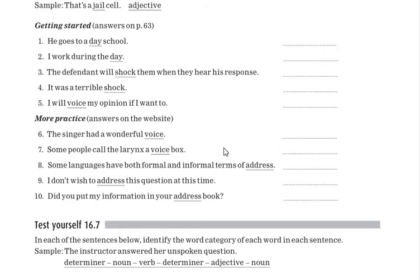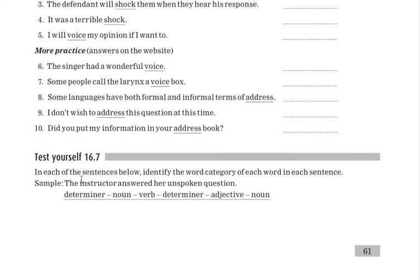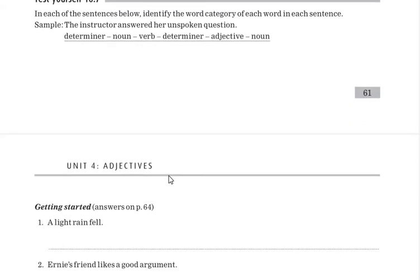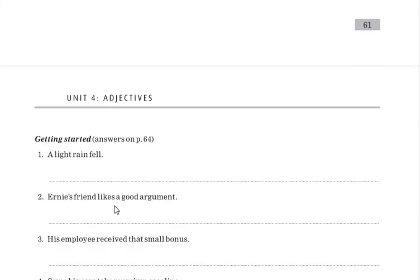Exercise 16.7 asks you to identify the word category of each word in a sentence. For example: 'the' is a determiner, 'instructor' is a noun, 'answered' is a verb, 'her' is a determiner showing possession, 'unspoken' is an adjective, 'question' is a noun. You need to remember all the rules covered so far to solve these exercises.